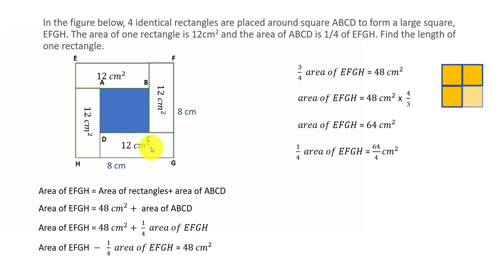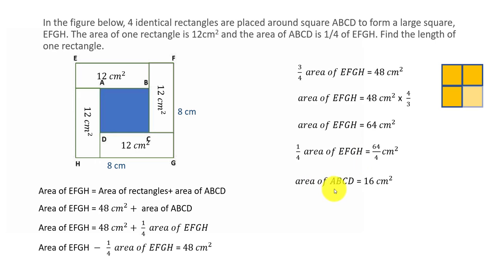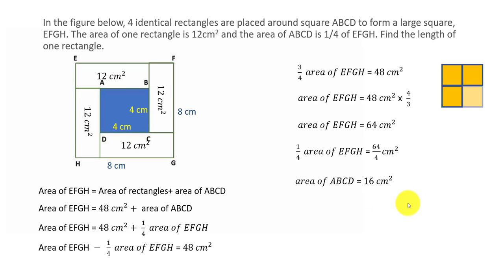Now we find the area of ABCD. The area of ABCD is one fourth the area of EFGH, which is 64 divided by 4 equals 16 cm². Since ABCD is also a square, its side length is the square root of 16, which is 4, because 4 times 4 equals 16. So the side of ABCD is 4 cm.